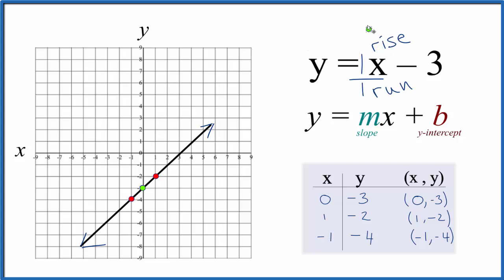So we'll rise 1 and go over 1. So we go to the y-intercept, we rise 1, go over 1. And then from there, we rise 1, go over 1. And you can see these points, they're all on our line.